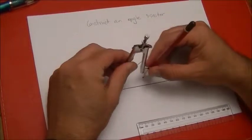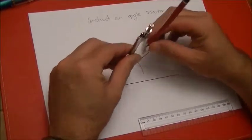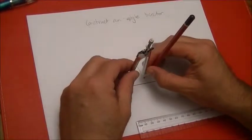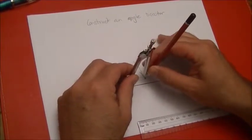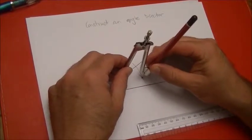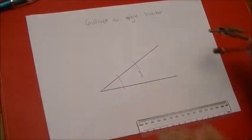These are called construction marks by the way, and you leave them in to show how you came about something. And so now I'm going to go to the other intersection point and I'm going to go like that. Now I'm actually going to go back to this one because what is important to me is where they cross over.